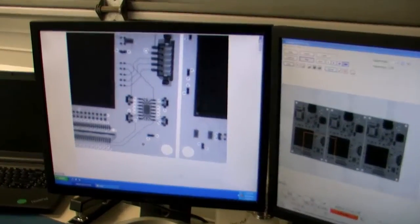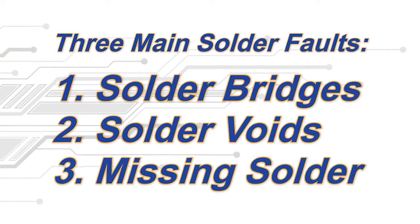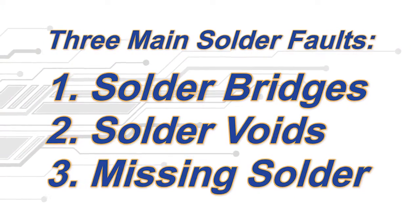operators can magnify the board up to 36,000 times to check for three main solder faults. These faults are solder bridges, solder voids, and missing or inadequate solder.